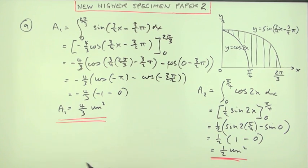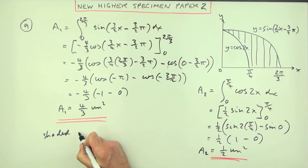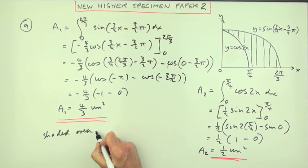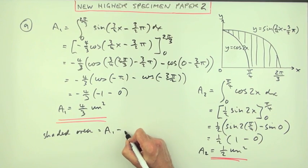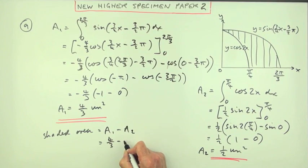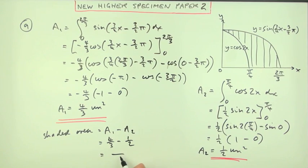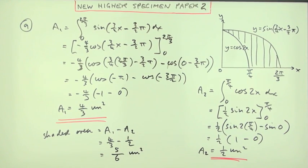That was Area 1 and that was Area 2. The shaded area is the big one take away the small one: A1 minus A2. Four upon three minus one upon two — converting both to sixths gives eight sixths take away three sixths, which is five sixths.